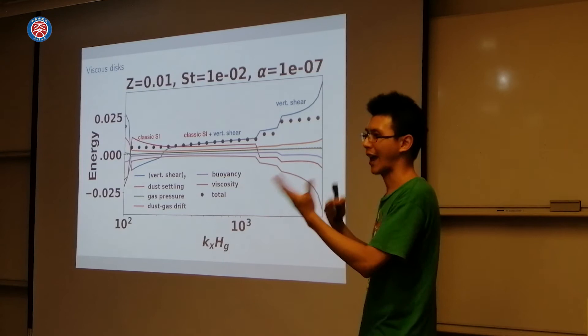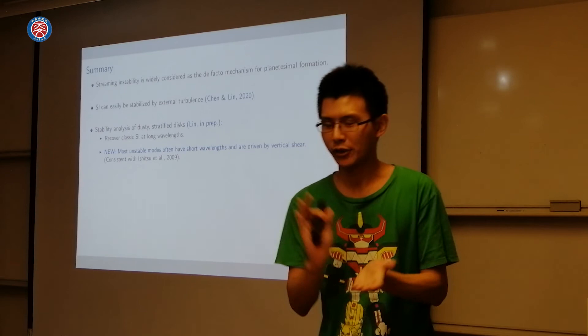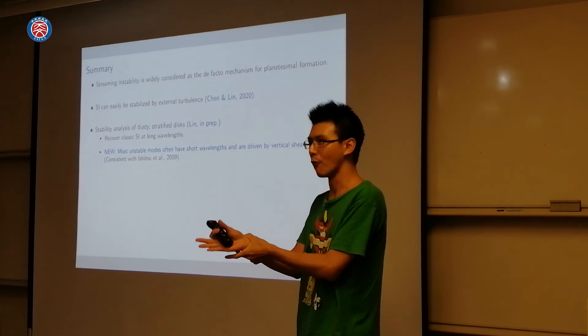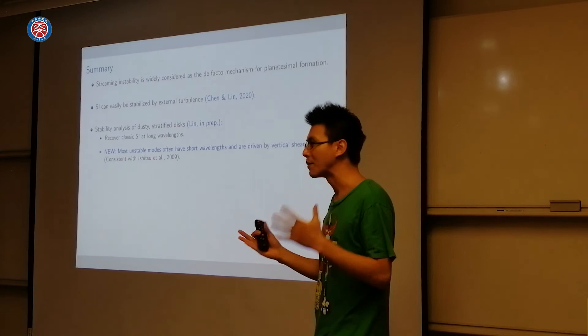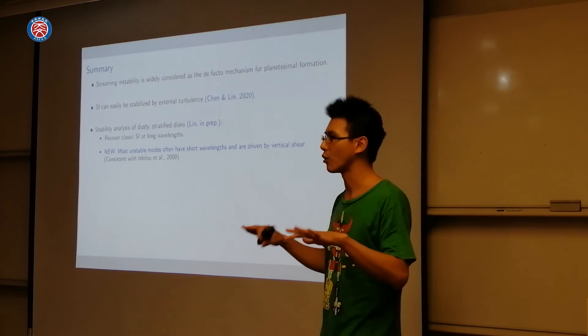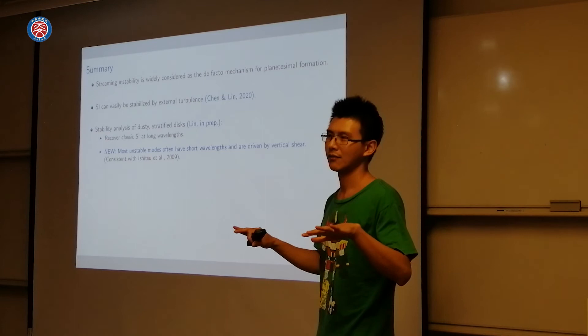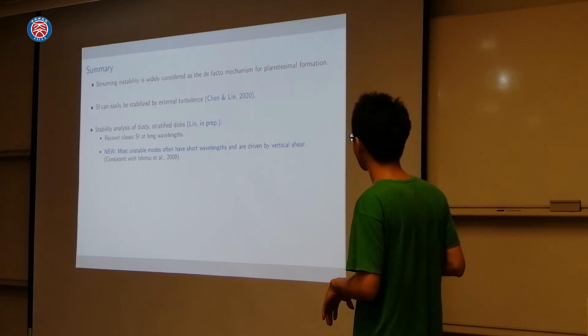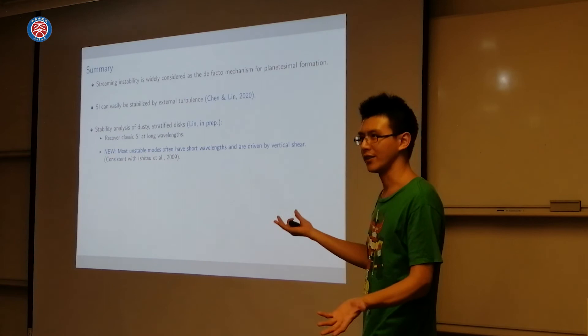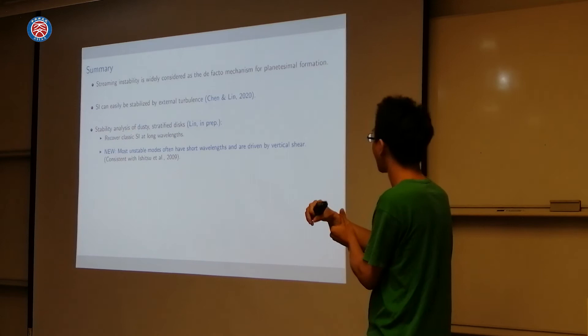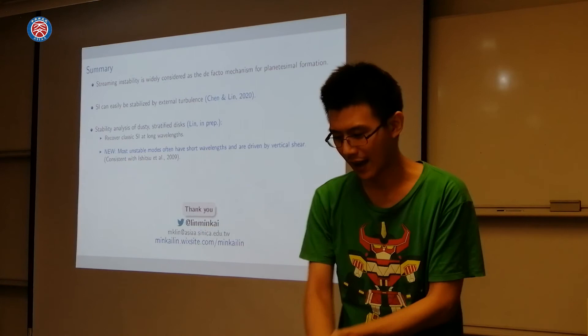To summarize: the streaming instability is the leading mechanism for planetesimal formation, but it can be very sensitive to turbulence in the system — if you have turbulence, it may not work so well. So if you want planet formation, it's probably best to have a not very turbulent, or nearly laminar, disk. Right now I'm finishing up this paper looking at the streaming instability in stratified disks, accounting for the full vertical disk structure, which is technically challenging but quite interesting. Thank you.